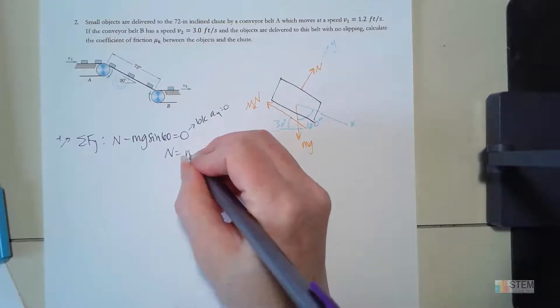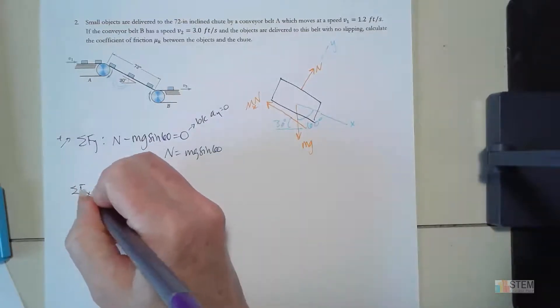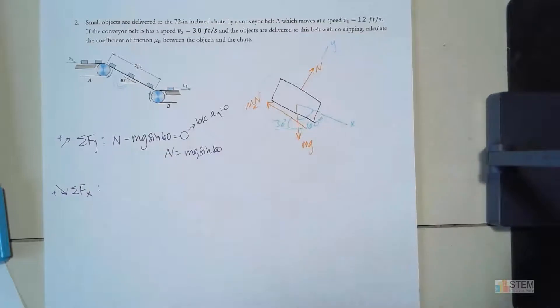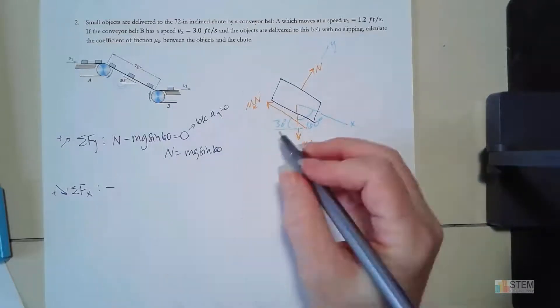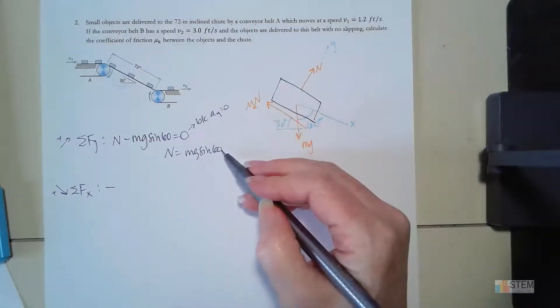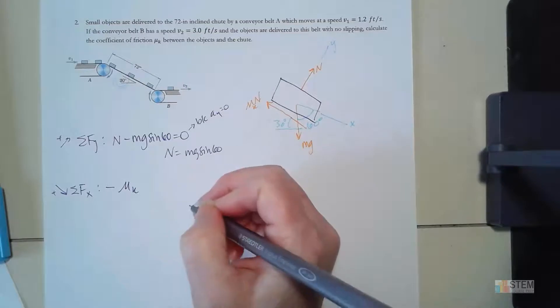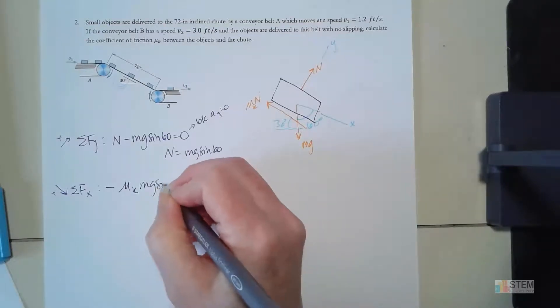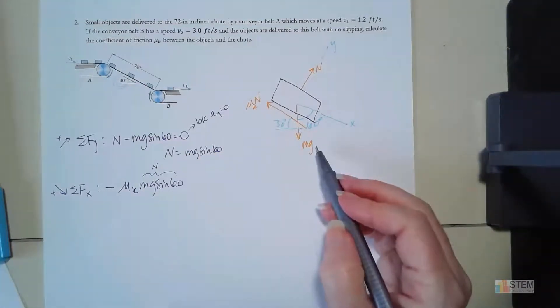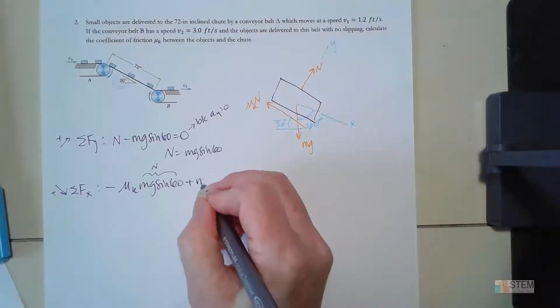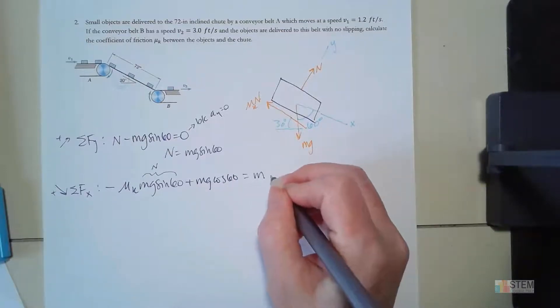So with that we can solve for n, we get mg sine 60. That's all we can do with that for now, so let's go to the x axis and sum up our forces. For this I'm going to have a negative friction, and remember that's mu times n. I have an equation for n so we're going to use that. So we're going to have minus mu k times mg sine 60. Then I've got my weight component, so this has an x component, it's going to be positive mg cosine 60. And this is going to equal m times ax.